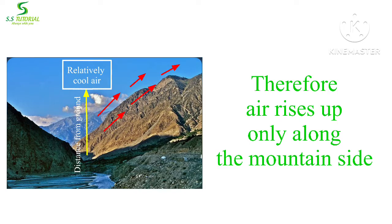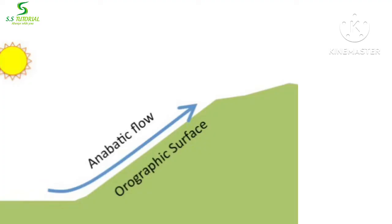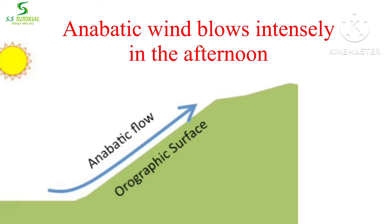When hilltop air rises up and cools adiabatically, cooling below its dew point, it condenses and forms cumulus clouds which can produce rain or even thunderstorms. Anabatic winds blow generally from sunrise to sunset and blow most intensely in the afternoon.